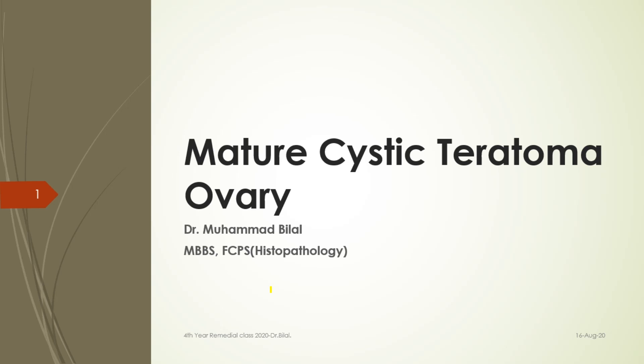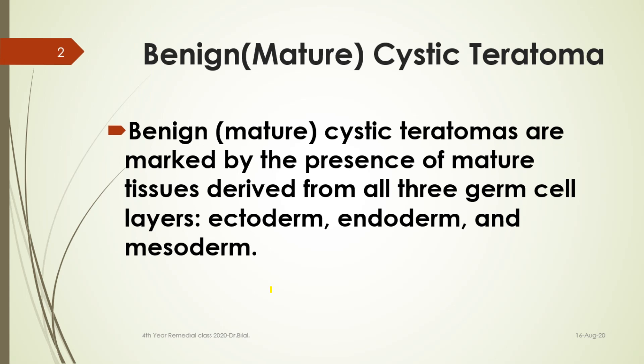We are going to talk about an ovarian tumor known as the mature cystic teratoma. Teratomas can be identified at other sites in the body rarely, but this is a place where mature cystic teratomas present commonly. The name indicates that mature cystic teratomas are marked by the presence of mature tissues derived from all three germ cell layers: ectoderm, endoderm, and mesoderm, and these tumors contain material or tissues derived from all of them.